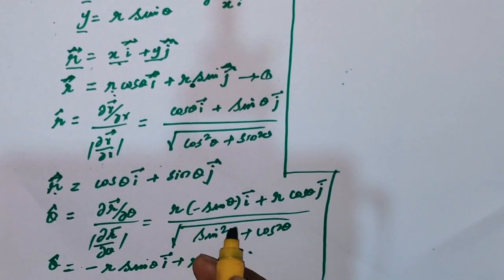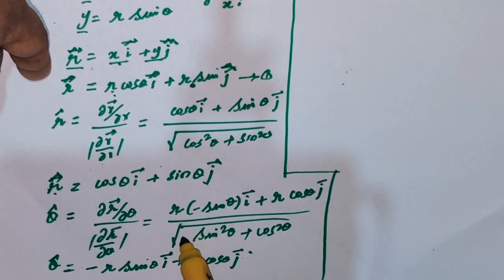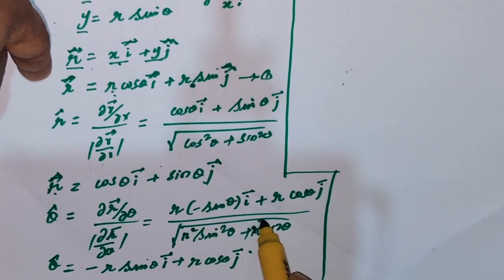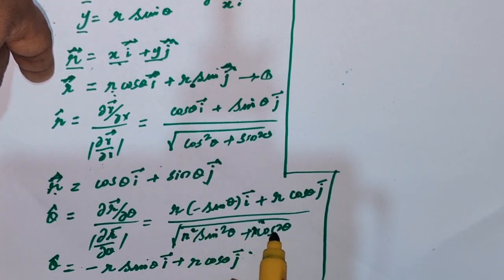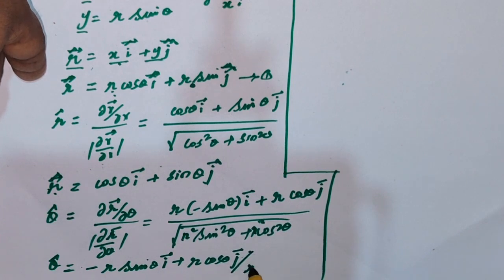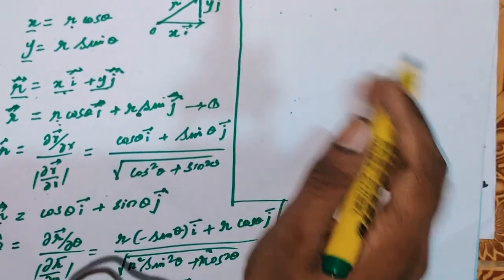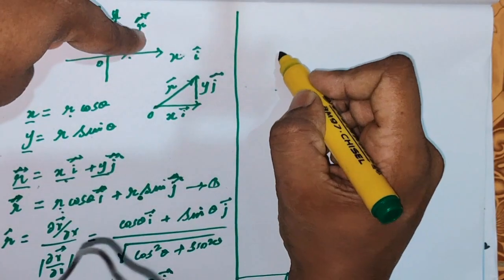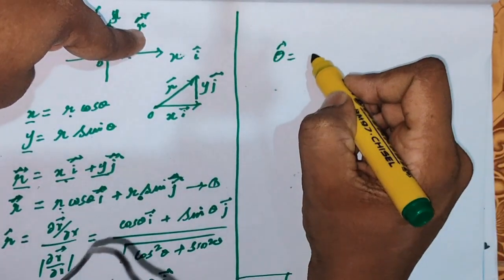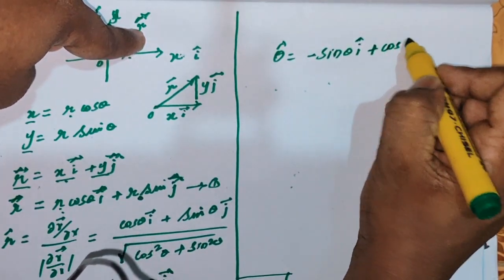Actually, there is one small correction. The modulus of ∂r/∂theta equals r²*sin²(theta) + r²*cos²(theta) under the square root, which simplifies to r²*(sin²+cos²) = r², giving modulus = r. Dividing numerator by r cancels it out. Therefore, θ̂ = -sin(theta)*î + cos(theta)*ĵ.